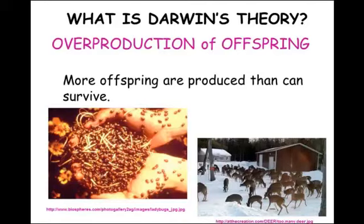The first part of Darwin's theory is the idea that organisms make way more offspring than are going to be able to survive — overproduction of offspring. For example, a female frog can lay thousands of eggs, drop them in the water, they get fertilized, and they hatch into tadpoles. Hopefully some of them will end up as adult frogs.